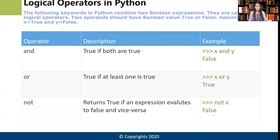Logical operators also return Boolean values and compare two Boolean expressions. The 'and' operator is used when both sides must be true. If x is True and y is False, then 'True and False' — both are not true — so the answer is False.